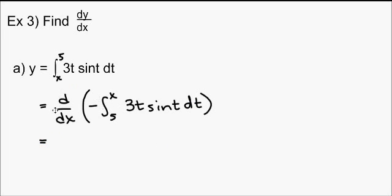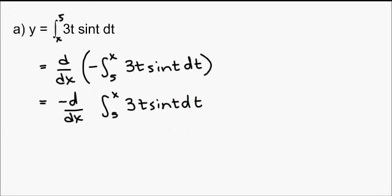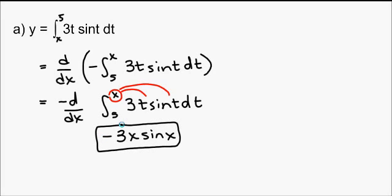I'm going to take the derivative also. So d/dx of negative integral from 5 to x, 3t sine t dt. And now that I have this negative, I'm going to kick it out here. So negative d/dx of my integral. And I know that to evaluate this integral, I'm just going to take my x and plug it in for both of my t's. So that gives me 3x sine x. But I can't forget about this negative out in front, so I need to put a negative there. And I get negative 3x sine x.